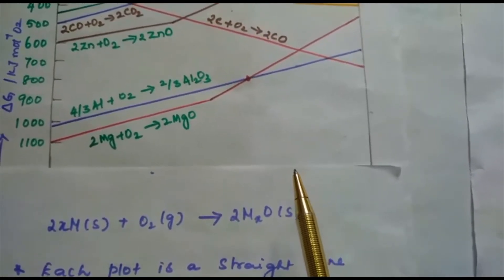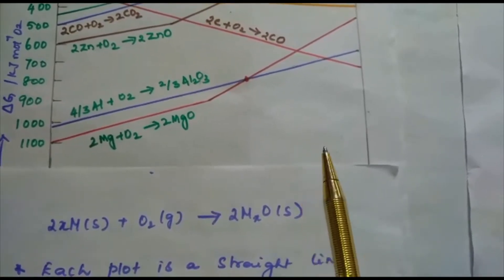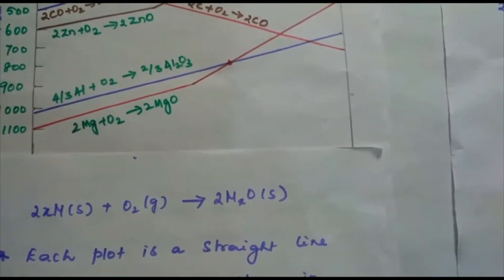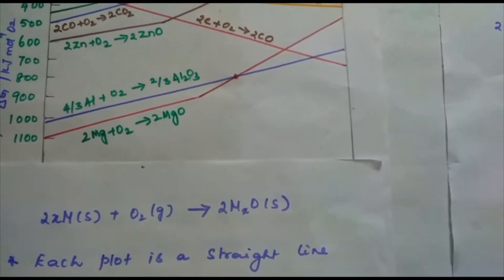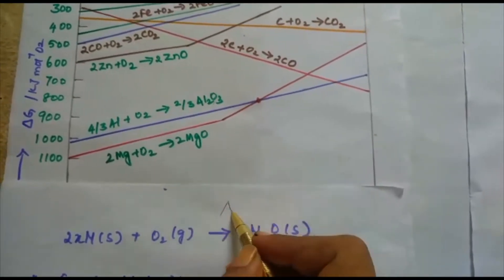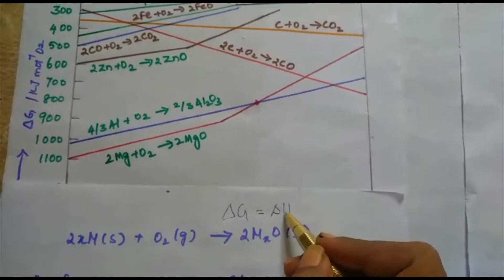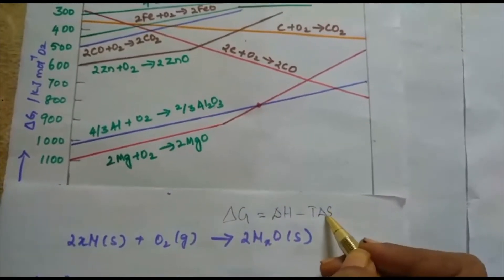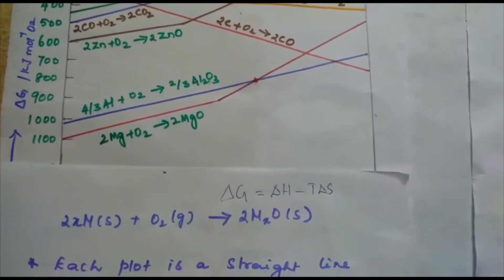Delta S is entropy, change in entropy, which changes the sign of the second term in this equation. That is, delta G is equal to delta H minus T delta S.